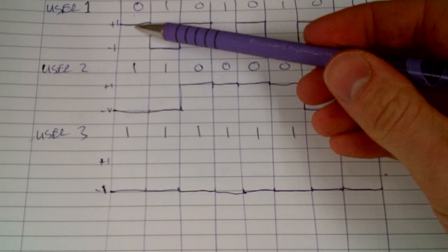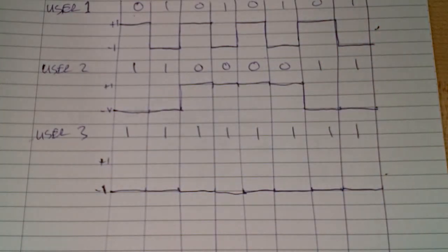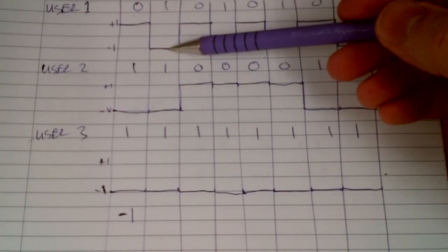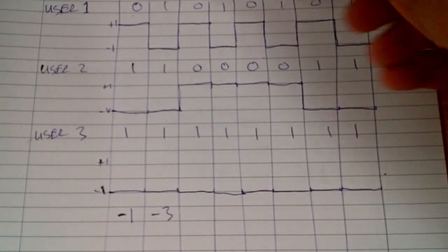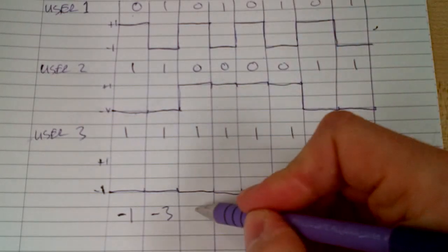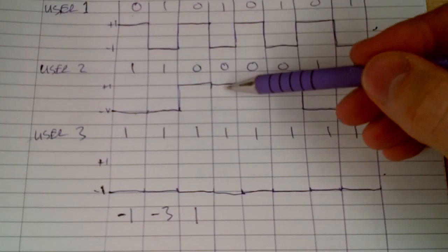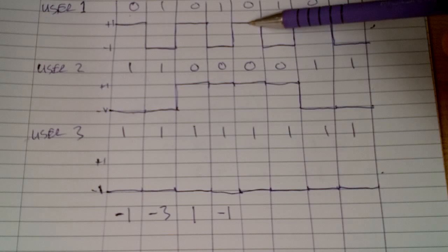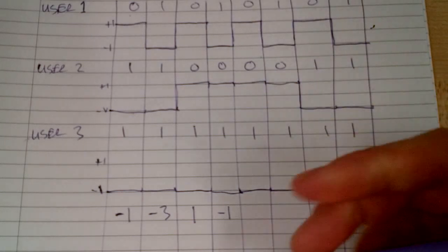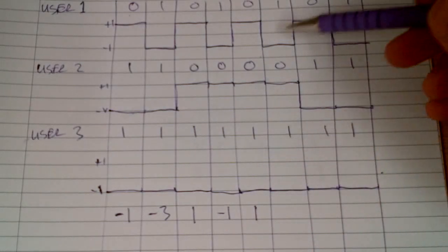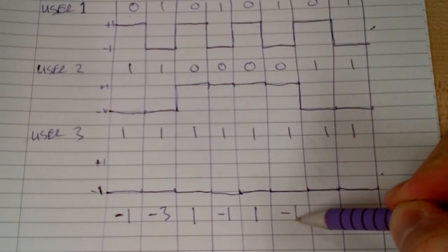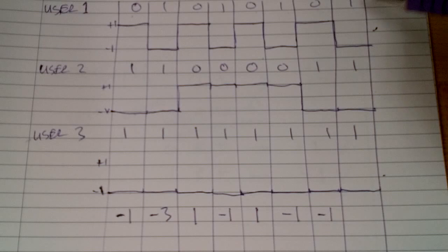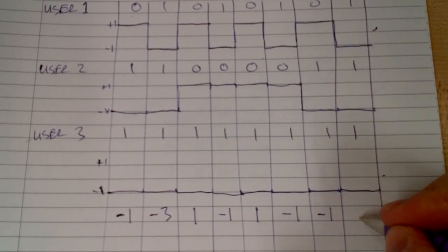So what do we have? We've got plus one, minus one, and minus one — that's minus one. Then minus one, minus one, and minus one — that's minus three. Plus one, plus one, that's two; two minus one is one. Then minus one, plus one, minus one works out to minus one. Plus one, plus one, minus one is one. Minus one, plus one, minus one is minus one. Plus one, minus one, minus one. And minus one, minus one, minus one works out to minus three.